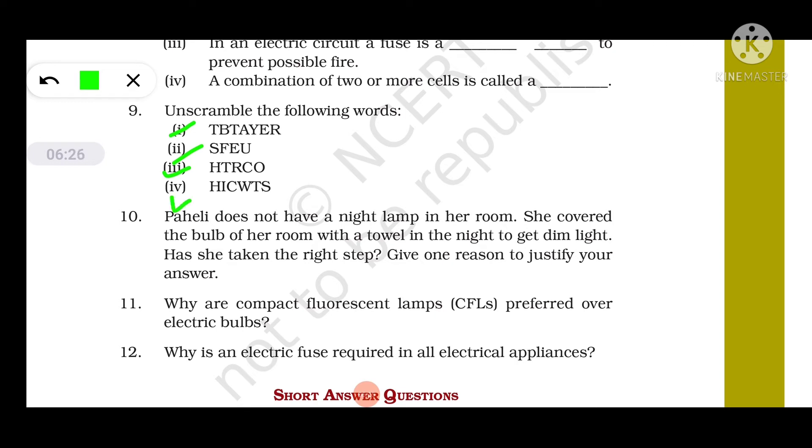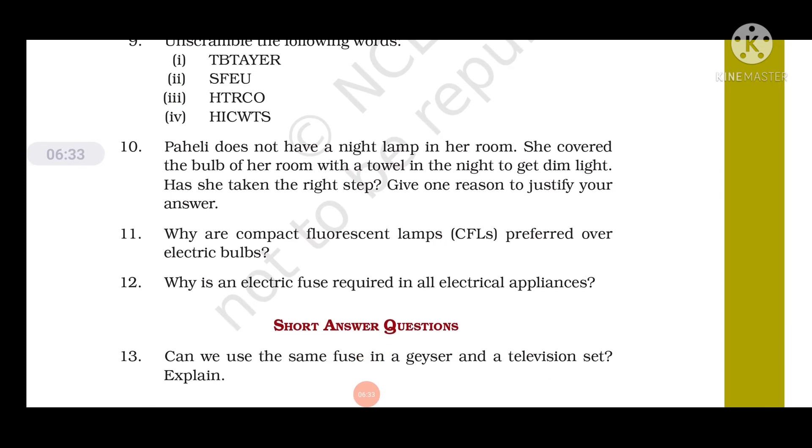Question number 10: Paheli does not have a night lamp in her room. She covered the bulb of her room with a towel in the night to get dim light. Has she taken the right step? Give one reason to justify your answer. No, the steps taken by Paheli are wrong because the towel may get burnt due to the heat produced by the bulb, and also the glowing bulb unnecessarily will waste the energy.